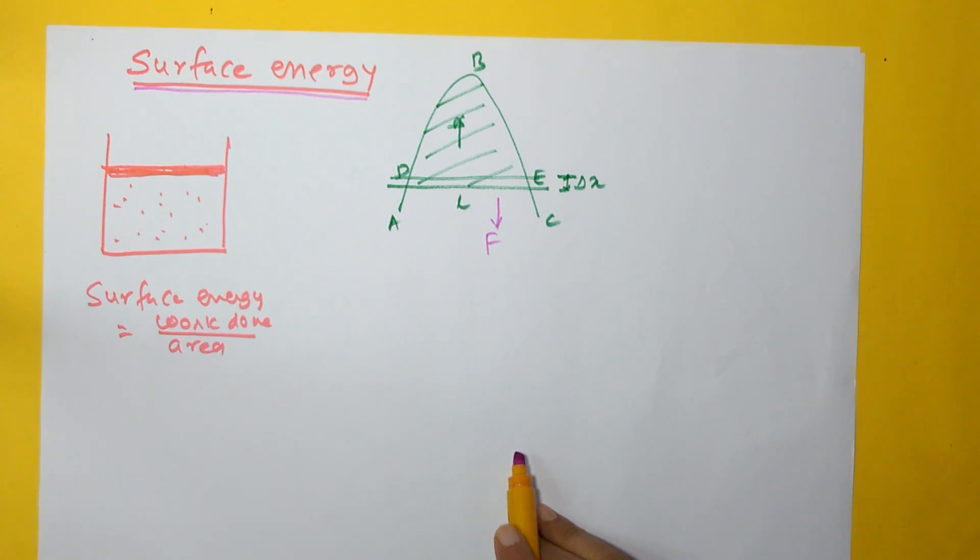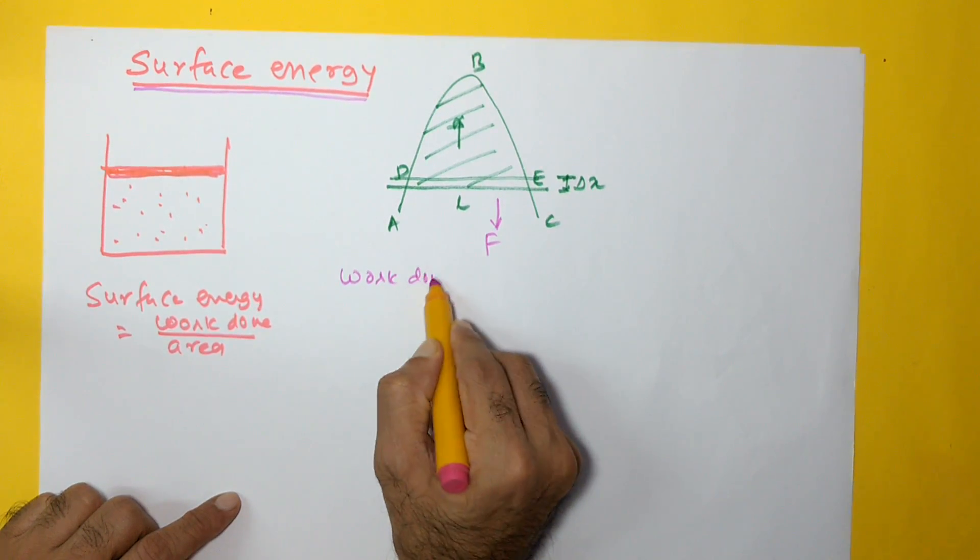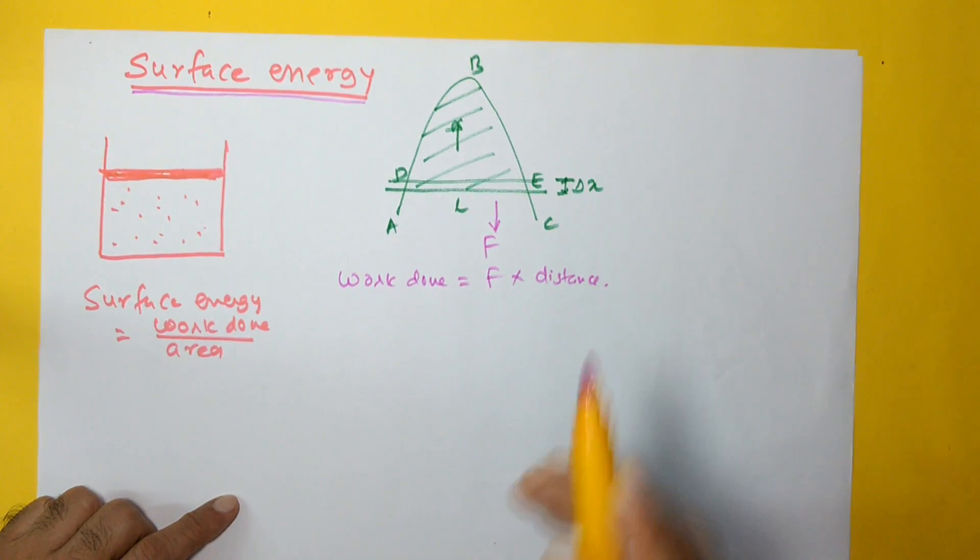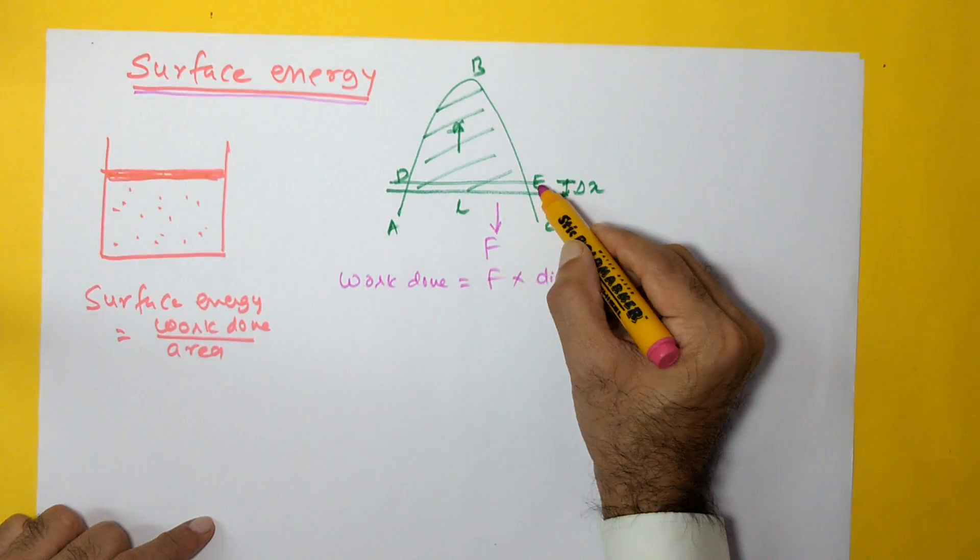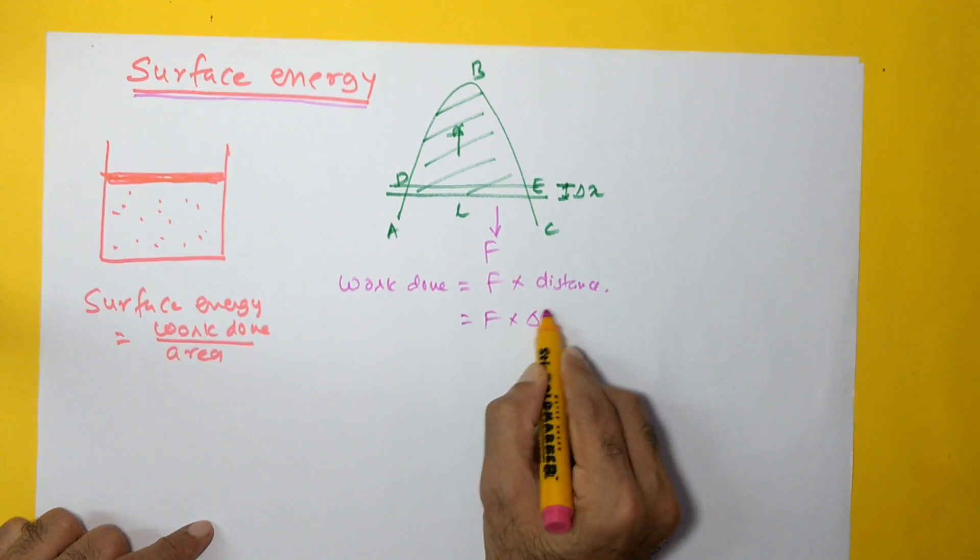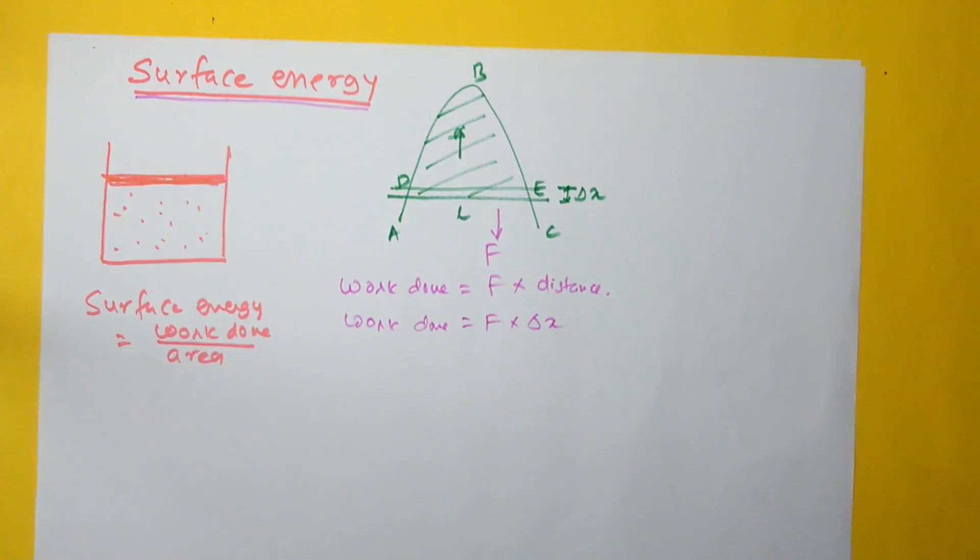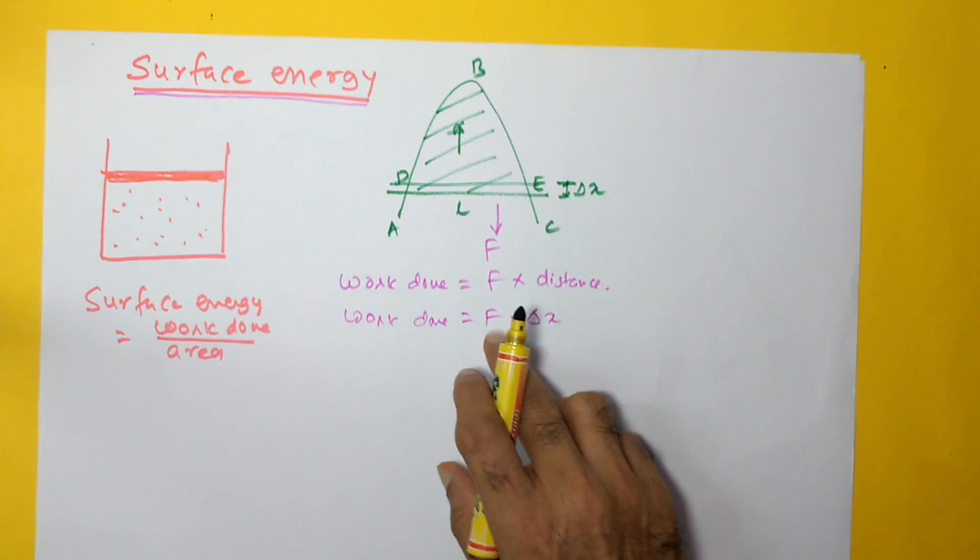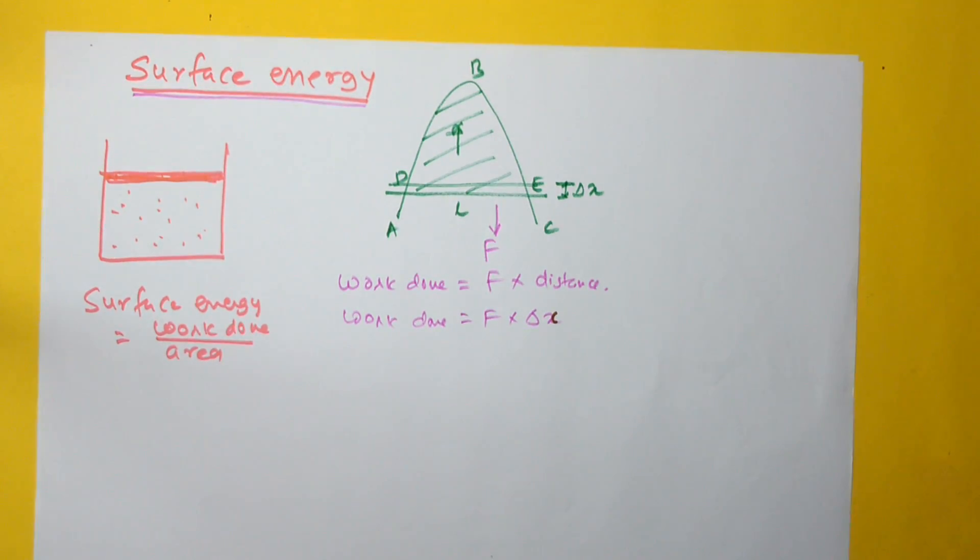That means we will have to do work, and this work which is done will be given by force into distance. Force is already known to us, and the distance that comes into play because we are preventing this wire from going through a distance delta x. So the work done would be F into delta x. Now we will have to identify the values for F. Delta x is already known to us. We will have to look at what F is or how we can obtain F.